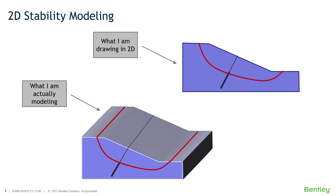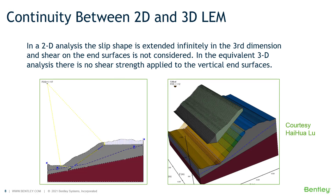That is why a two-dimensional factor of safety is somewhat conservative — it does not account for the frictional resistance of the sides of the barrel. Likewise, our anchor in three dimensions is actually a steel plate, and we scale it back to approximate the load taken by an anchor. In reality, anchors are point loads, and we are approximating them with a plate load that is scaled back in strength. If we look at continuity between 2D and 3D LEM, we want to set up a three-dimensional model that exactly replicates a two-dimensional model, and the factor of safety will be exactly the same as 2D.